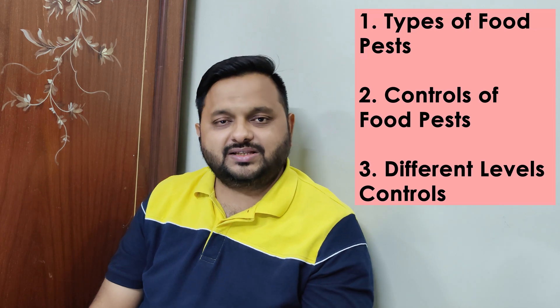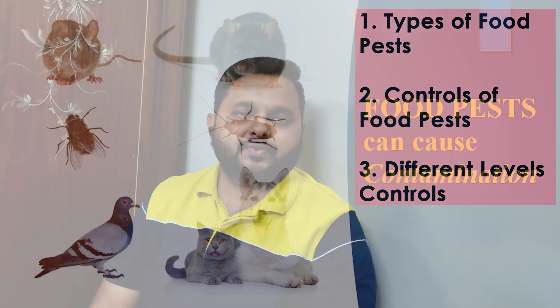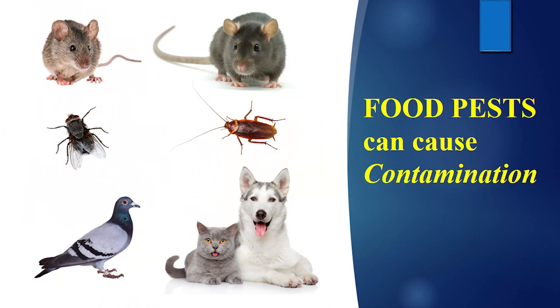In today's video we'll talk about what are the major types of food pests, how to control them, and what are the different levels of controls. Food pests can be of many types. Common examples include rodents like rats and mice, insects like flies and cockroaches, and also birds, dogs, and cats. All of these food pests can contaminate food and cause huge problems in food businesses.